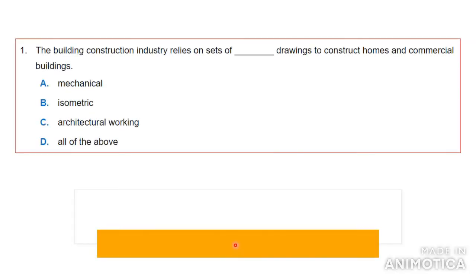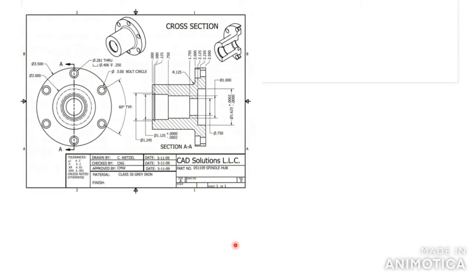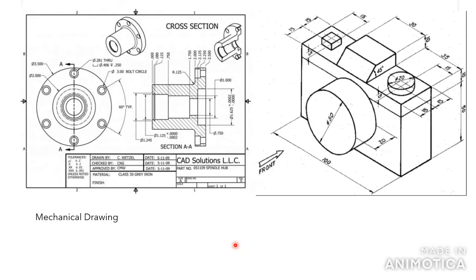Number one says: the building construction industry relies on sets of blank drawings to construct homes and commercial buildings. The options are mechanical, isometric, architectural working drawings, or all of the above. I'm going to show you what mechanical and isometric drawings are. Here is an example of a mechanical drawing showing the front view, side view, and cross section. This is an isometric drawing where some lines are at 30 degrees.